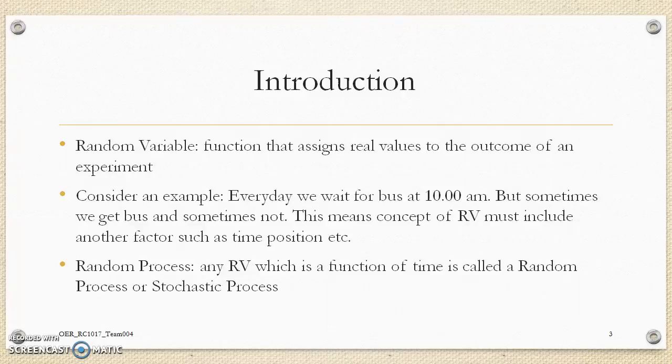Introduction. A random variable is a function that assigns a real value to the outcomes of an experiment. Consider an example: every day we wait for a bus at 10 am, but sometimes we get bus and sometimes not. This means concepts of random variable must include another factor such as time, position, etc.